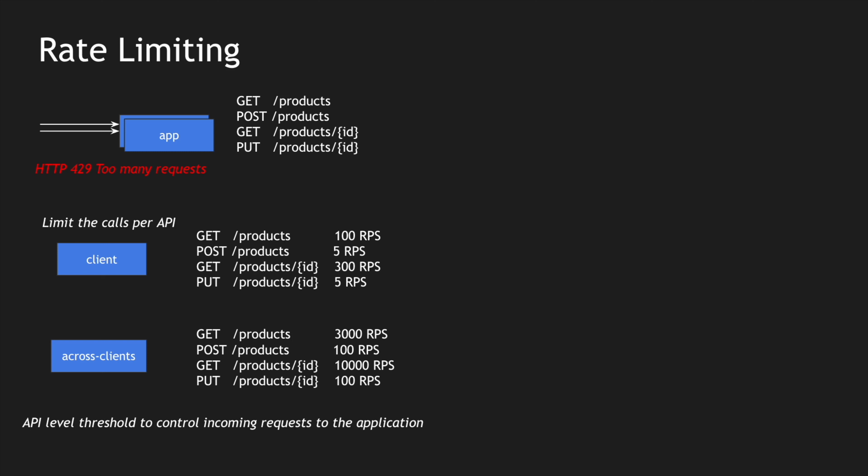In the last video we saw what is rate limiting and also what is load shedding. In this video we are going to implement rate limiting using the Spring Cloud Gateway within a Spring Boot application. We have an application or multiple instances of the application, requests coming in, and we restrict the rate limiters to an API-specific limit — for example, get products had 100 RPS.